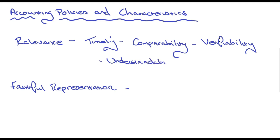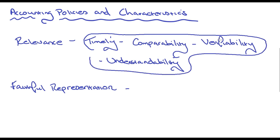And then finally, understandability. So there's no point in preparing a set of accounts that nobody understands. So information needs to be clear, it needs to be concise, so that the users can actually understand the information given in that. So these four here, so timely, comparability, verifiability, and understandability support both relevance and faithful representation.